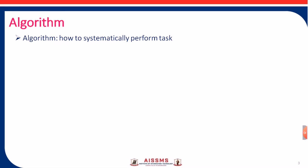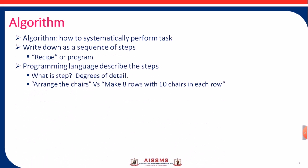First we have to write the algorithm for the program. We can say this algorithm as a recipe of your program. This particular recipe must explain the degrees of detail of every step. So we can observe here two statements: arrange the chairs versus make eight rows with ten chairs in each row. The next statement is having more degrees of detail than the first one, so here we can perform our task very clearly as compared to the first statement.